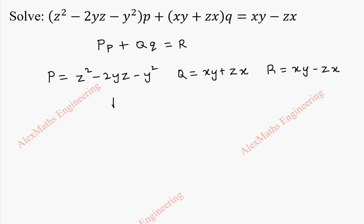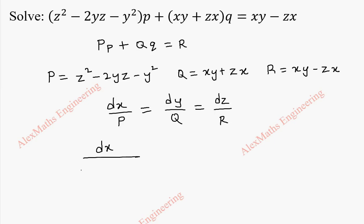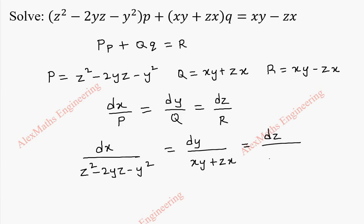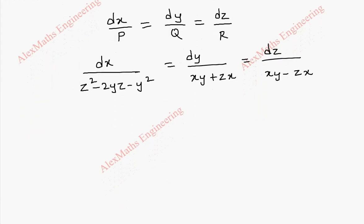To get the solution, we have to solve dx/P equal to dy/Q equal to dz/R. Substituting capital P, Q, and R: dx by (z squared minus 2yz minus y squared) equals dy by (xy plus zx) equals dz by (xy minus zx). Now we are going to take the last two terms at a time and solve.